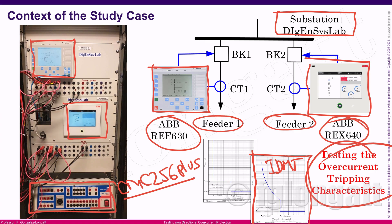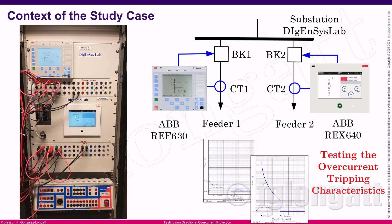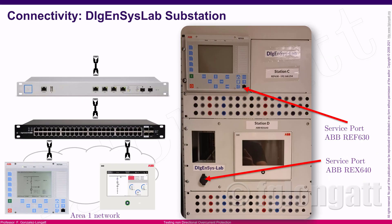Before we move forward, you must understand that protection systems today are cyber-physical components and are a key component of the digital transition. One aspect I must explain is the connectivity inside the DGENCYS substation. Both relays, the ABB REF630 and the REF640, have Ethernet connectivity.